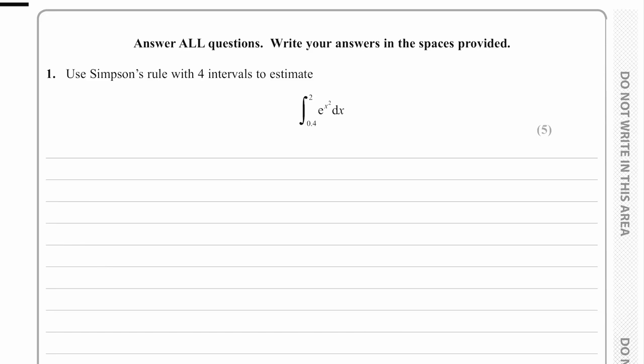Hi everyone. In this question we've been asked to use Simpson's rule with four intervals to estimate this integral. We need to recall what Simpson's rule is: the width of each interval h divided by three, multiplied by the sum of the endpoints plus four times the odd y values plus two times the even y values.